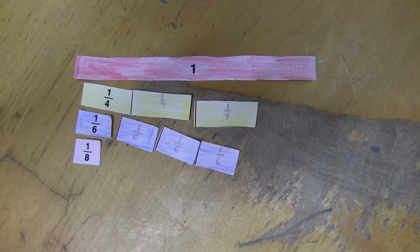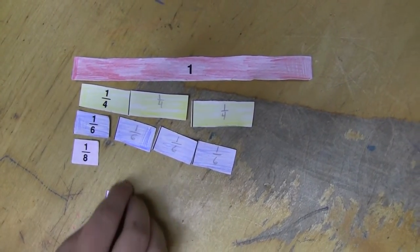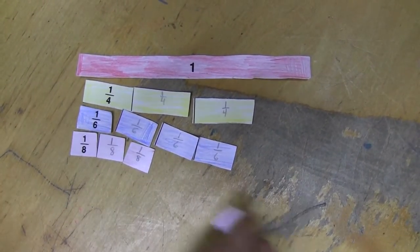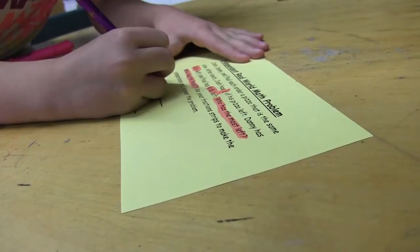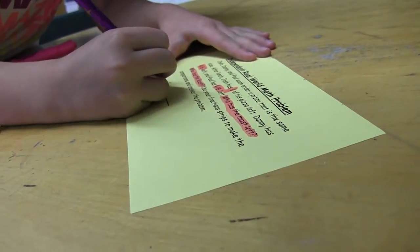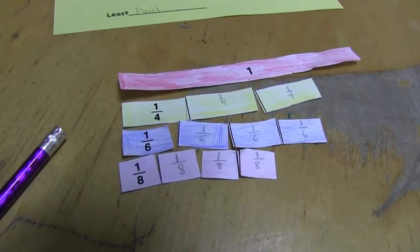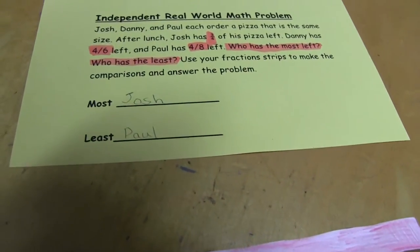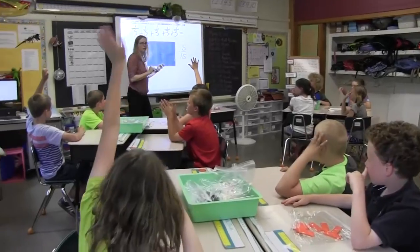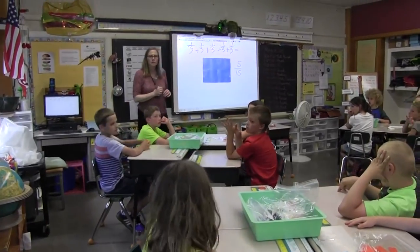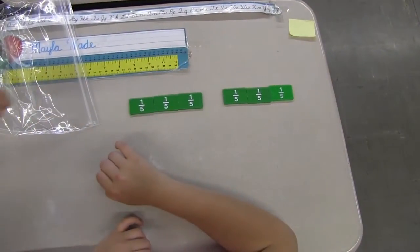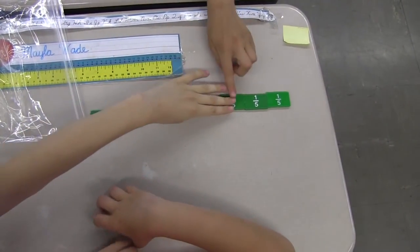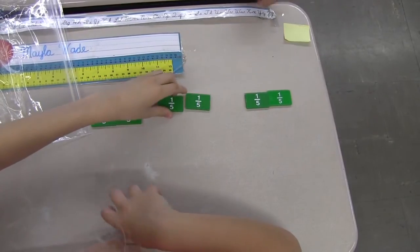The students use their fraction bars, which show how fractions represent the whole. They used the fraction bars to find which fraction was the most, which fraction was the least, and then had to make comparisons — for example, one half plus one half, or three fifths plus two fifths.